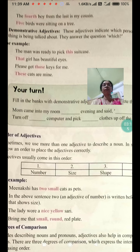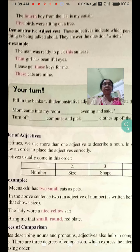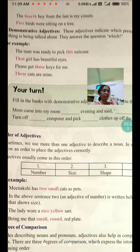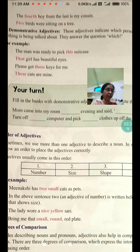Now, order of adjectives. Sometimes we use more than one adjective to describe a noun. In such cases, we should follow an order to place the adjectives correctly: number, size, shape and color.